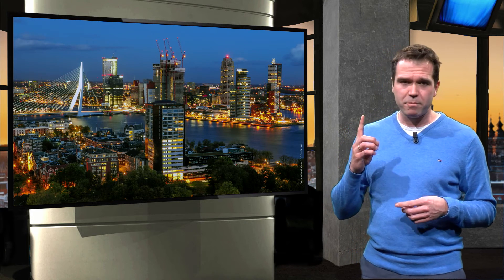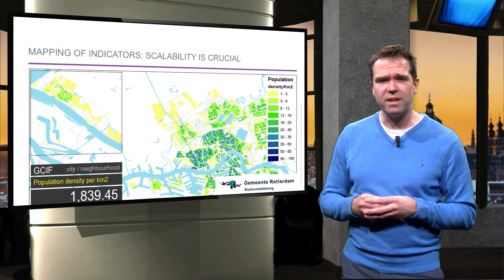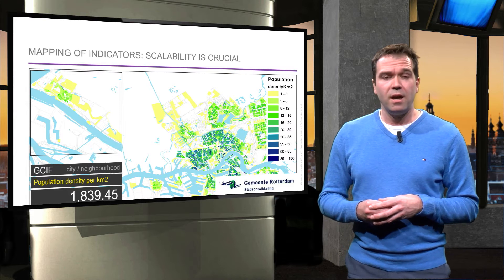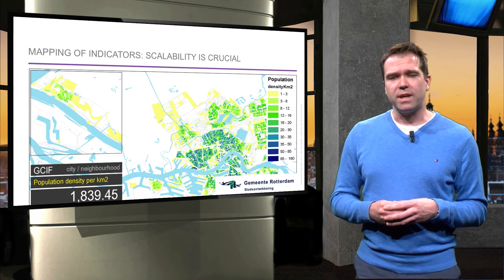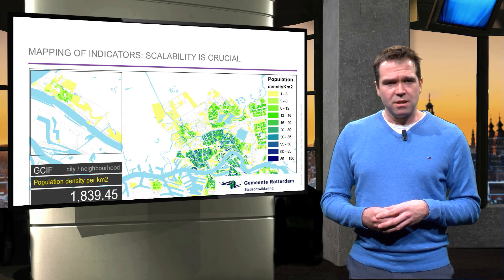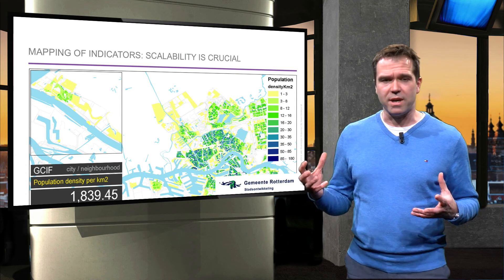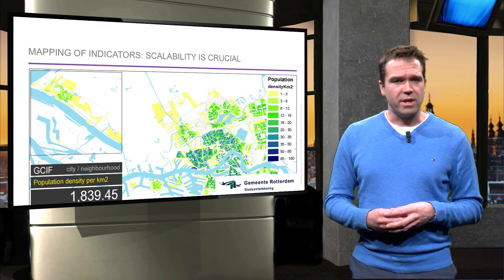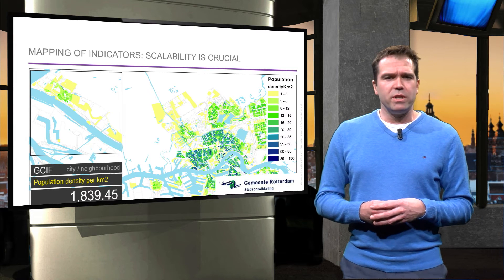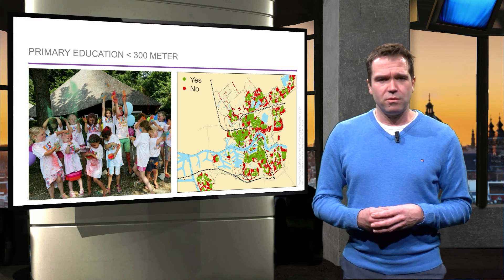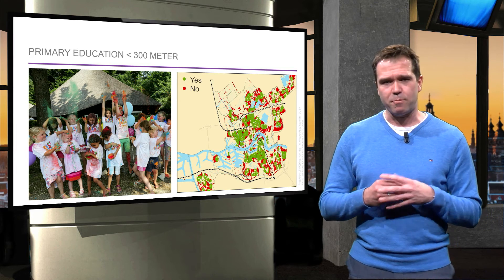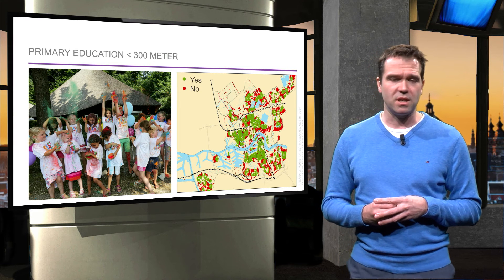Since it is easier to read one map than a dozen Excel sheets, data are mapped. Scalability of data is of crucial importance. Therefore, in Rotterdam, this data is stored at the lowest level possible and includes geographic references. GIS is used to compute, analyse and visualise the data, allowing the city to present data from block or neighbourhood or even city level. By doing so, it becomes possible to not only show what is happening in the neighbourhood or city, but also where it is happening. This is of great value for decision making and action plans.